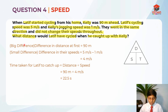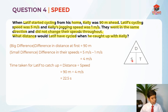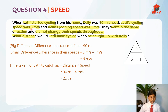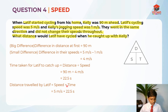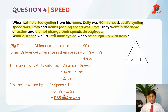Now, what distance would Latif have cycled when he caught up with Kelly? We already know the time to catch up. Distance equals speed times time. Latif's speed did not change — it's always 5m per second. So the distance traveled by Latif equals 5m per second times 22.5 seconds, which gives us an answer of 112.5 meters. That is the answer for question 4, testing us on speed.